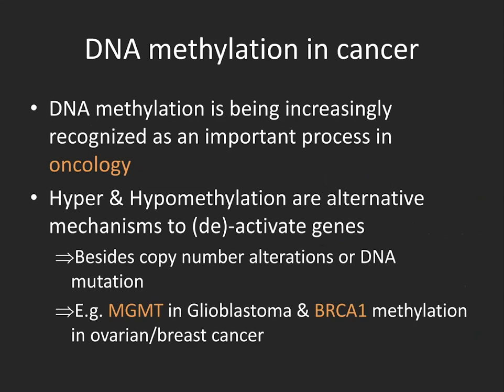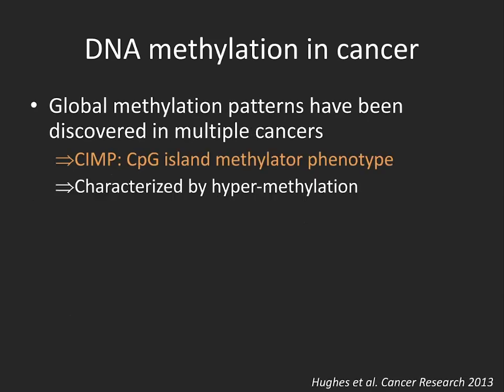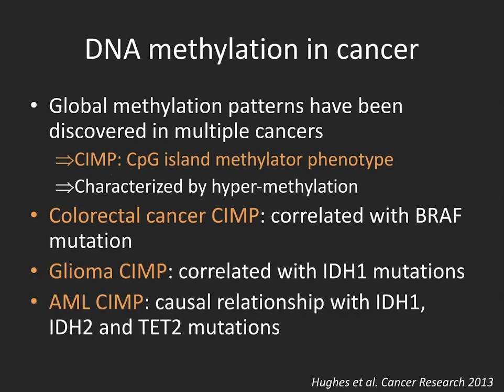Two examples: MGMT hypermethylation in glioblastoma is a well-known event, and methylation of BRCA1 in ovarian and breast cancer is an alternative mechanism to inactivate these tumor suppressor genes. Another important aspect in oncology is the so-called CIMP phenotype, which is a global hypermethylation phenotype observed in colorectal cancer, glioma, and AML. This essentially defines subtypes or subgroups of patients that have this hypermethylation phenotype, and these patients will likely behave differently with treatments.